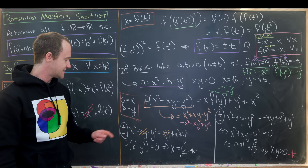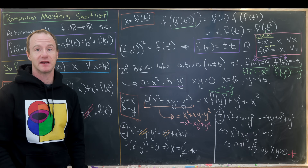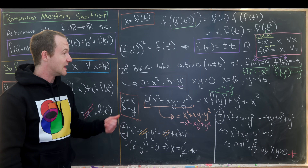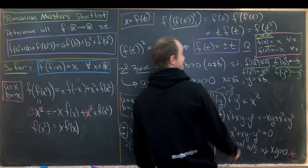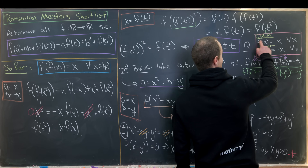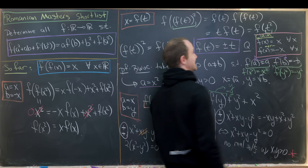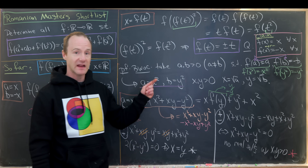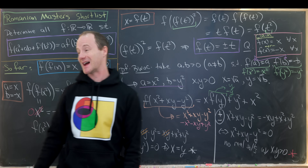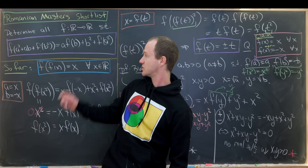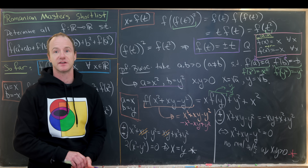In conclusion, we've shown that either f(x) = x for all x, or f(x) = -x for all x. The last thing to verify is that both of these actually satisfy the original functional equation — but that's straightforward to check, so I'll leave it to you. And that's a good place to stop.